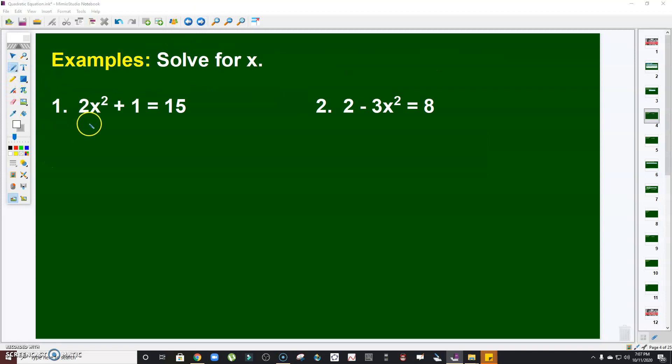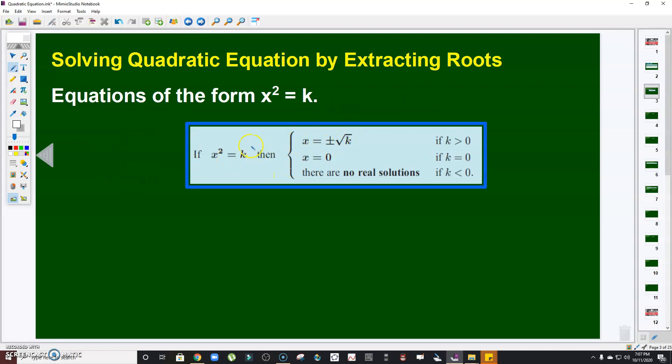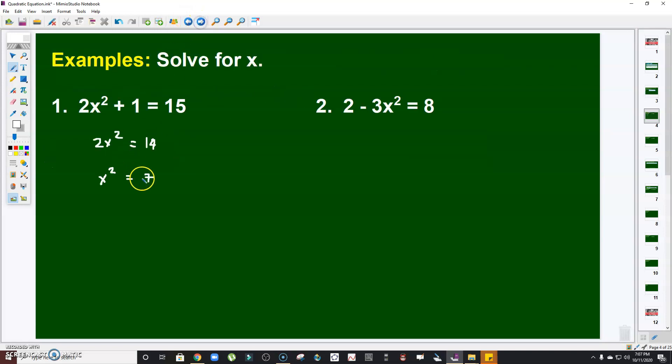Let's have an example. Our first thing to do here is to combine like terms. That will be 15 minus 1, so that's 14. Divide both sides by 2. So I'm going to have x² = 7. This will fall under case 1. k is positive and that is 7. Therefore, the answer that we're expecting is just extract the square root. So x = ±√7. If your answer is just square root of 7, that's wrong. Take note, the second degree should have two roots.